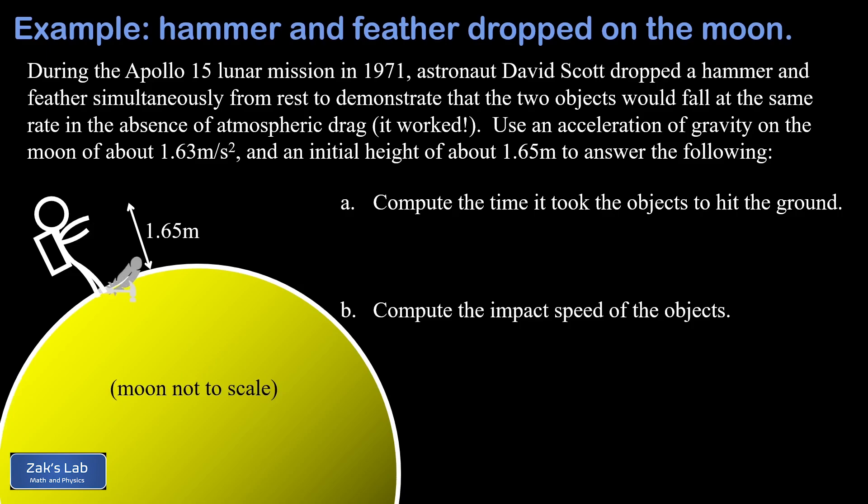The interesting thing about the problem is that we can study vertical free-fall without using the usual 9.8 meters per second squared that we use near the surface of the earth. Gravity is a lot weaker near the surface of the moon and it has this smaller value of 1.63 meters per second squared, which is about one-sixth the strength of gravity on earth.